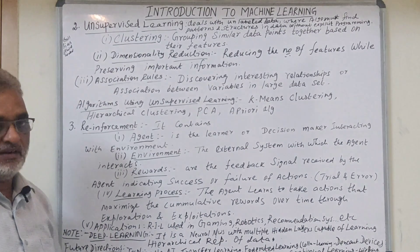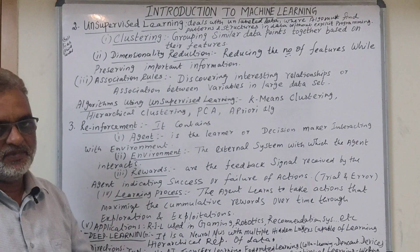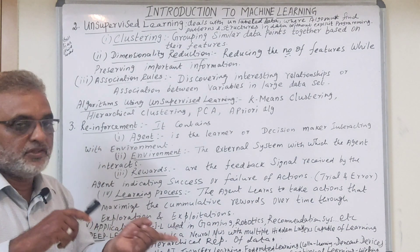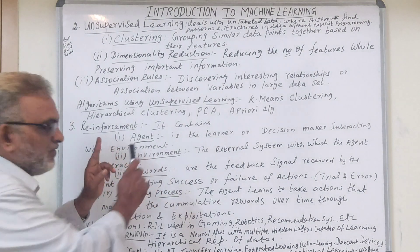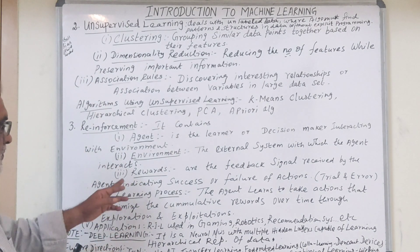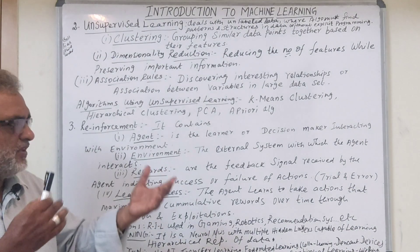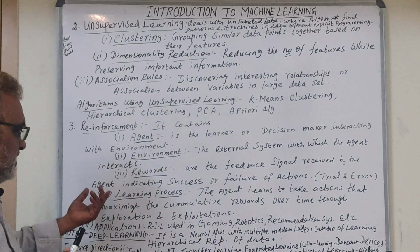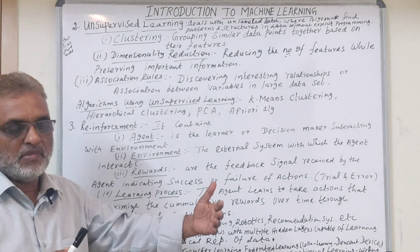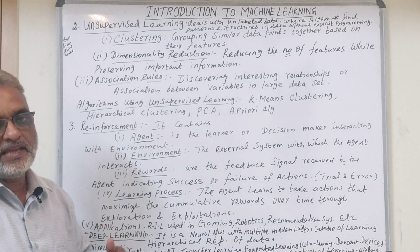The third type is reinforcement learning. It contains a very important component — the agent, which is the learner or decision maker interacting with the environment. The environment is the external system with which the agent interacts. The agent interacts with the environment and gains knowledge. The reward is another important concept — it is the feedback signal received by the agent indicating the success or failure of an action. Based on its knowledge, the agent performs actions; if it results in success, the agent gets rewards, and if it is a failure, the agent gets a penalty.